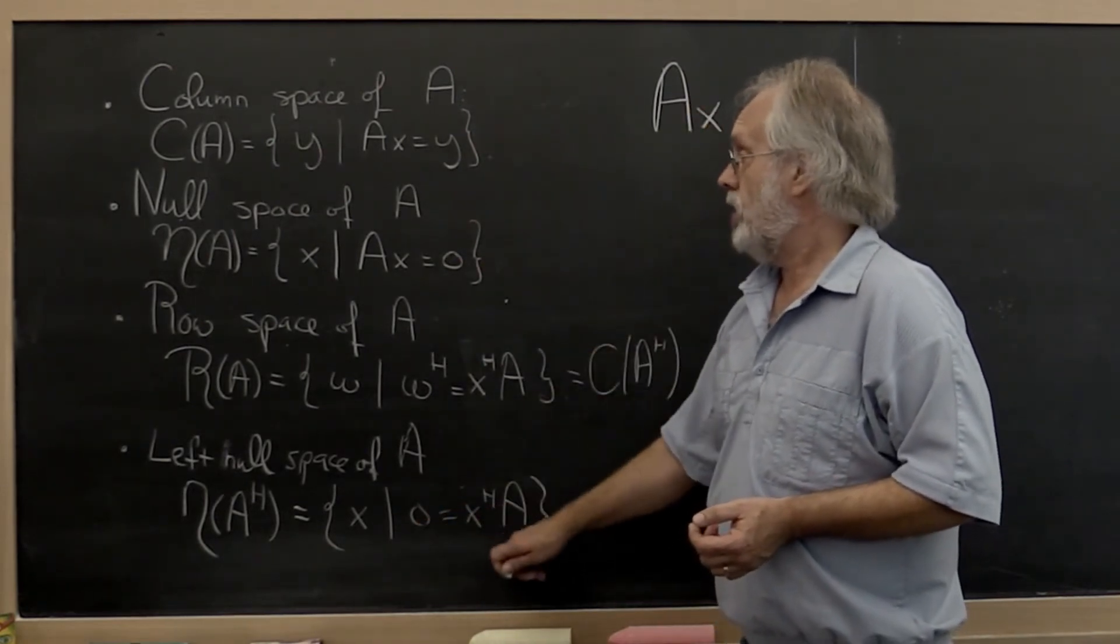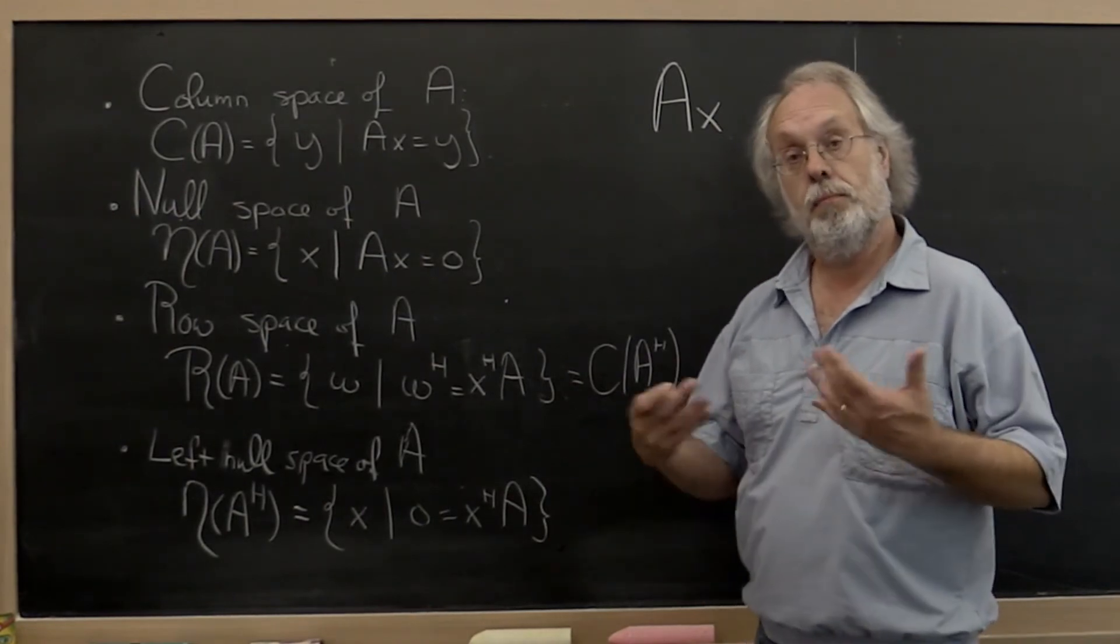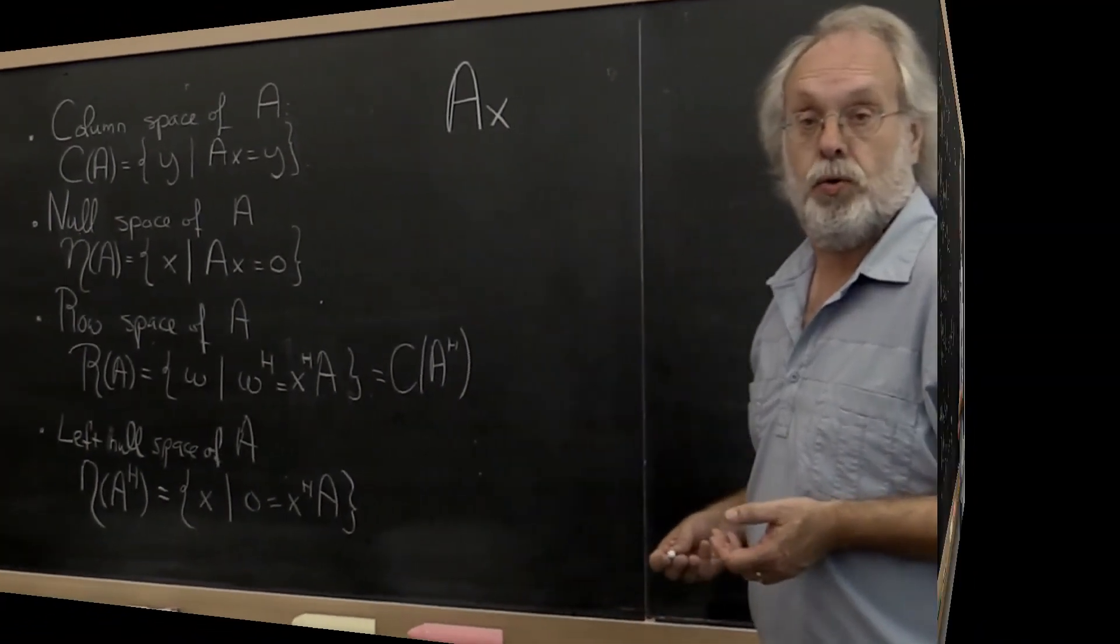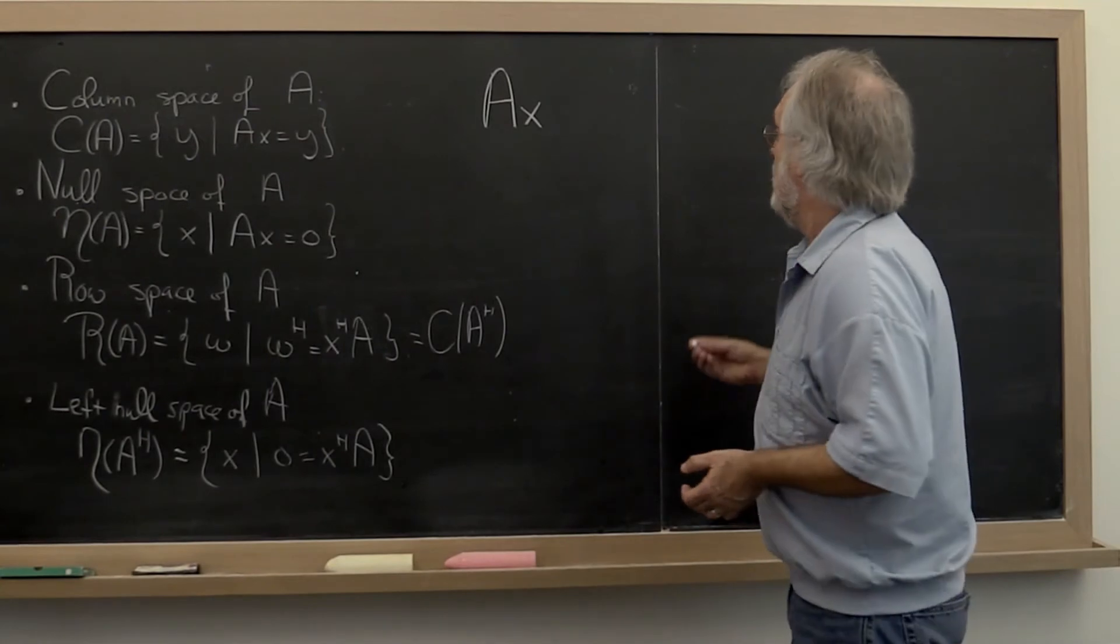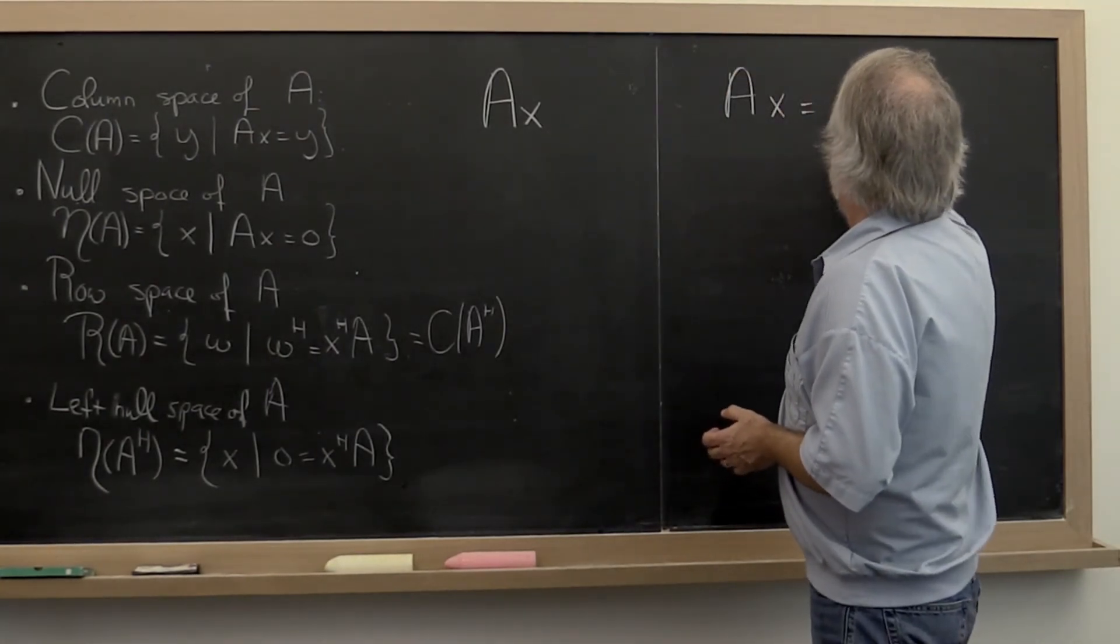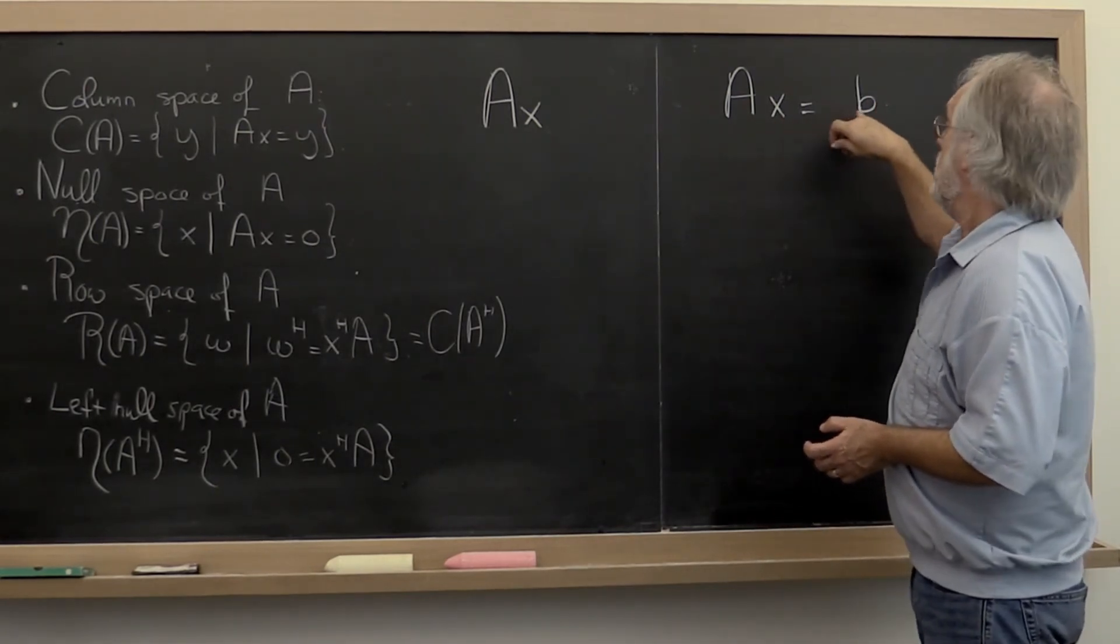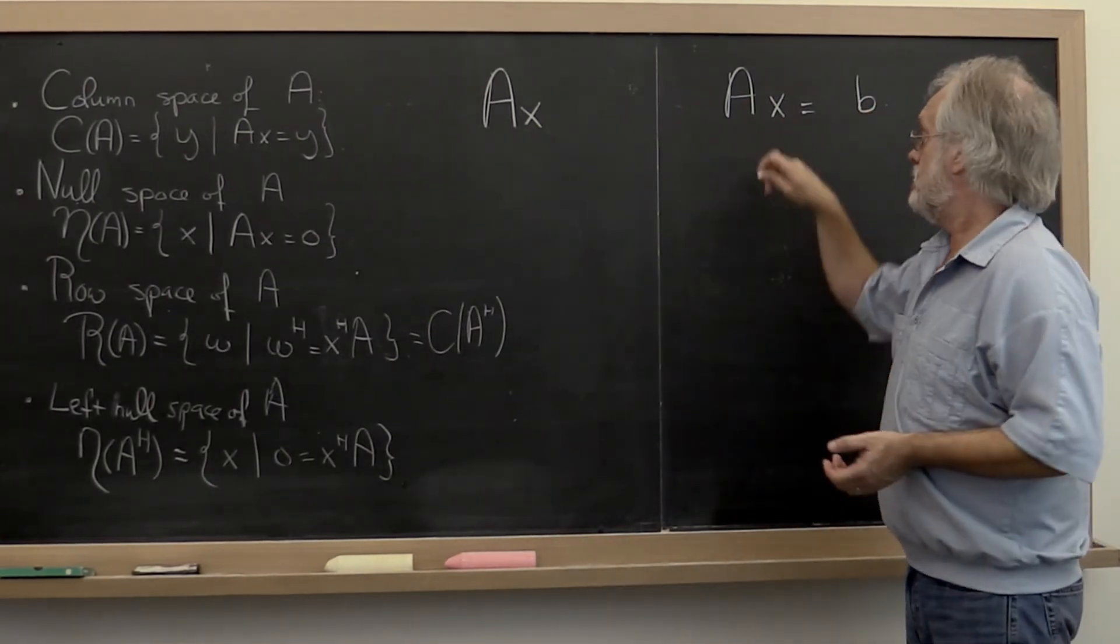And these are known as the four fundamental spaces. Now some properties that you learned along the way was that if A times x is equal to B, if this actually can be solved, then B must be in the column space of A.